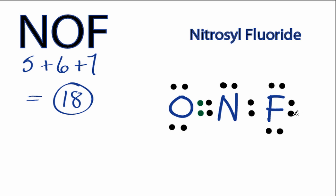And the fluorine didn't change, it also has 8 valence electrons. So we've used all 18 valence electrons, and each of the atoms has octets.